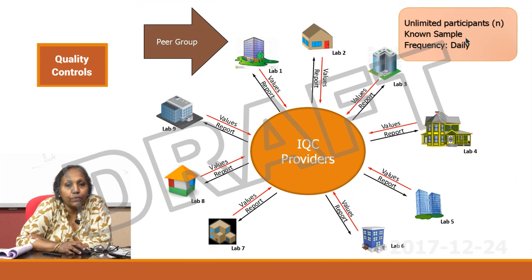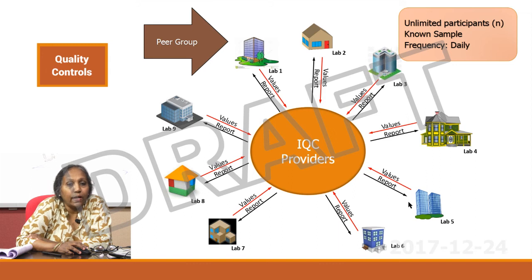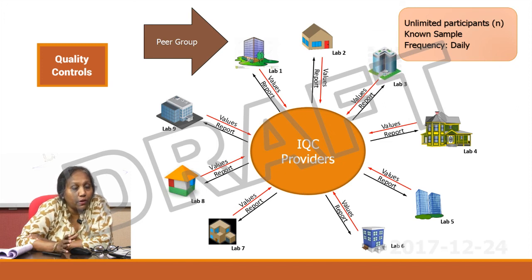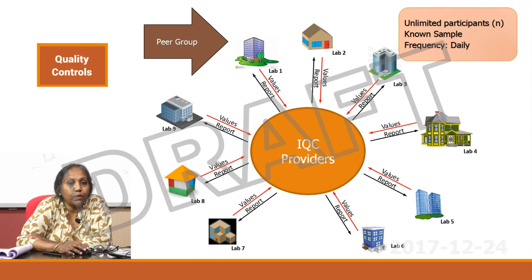This is how the peer group mechanism works. The IQC providers give you known materials — these are not blind samples as in EQA where you do not know the value. With IQC you already know the value because it is provided with your IQC material. You analyze, everybody else also analyzes, and you pool in your values. The IQC provider finds a mean and lets everybody know what the mean is and how much you are straying away from the mean, giving you an idea about your inaccuracies.